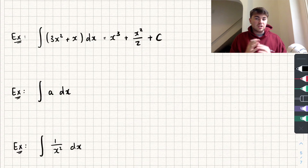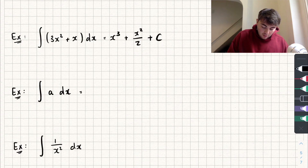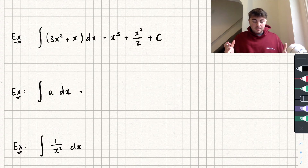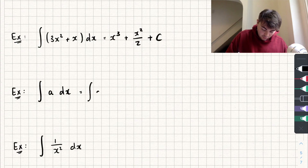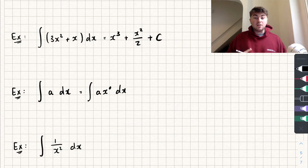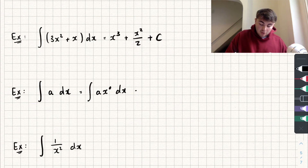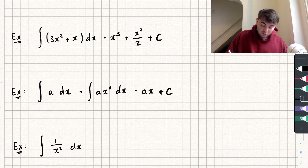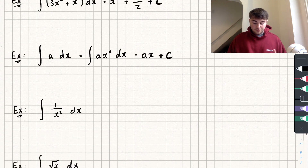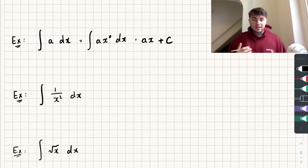The third example: integrating a constant 'a', where a is just some number. There are no x terms, but we can write it as the integral of a multiplied by x to the power of zero, since x to the zero is just one. Now we can integrate: we add one to the power to get x to the power of one, which is just x, and divide by one — which doesn't change anything — giving us a times x, plus c.